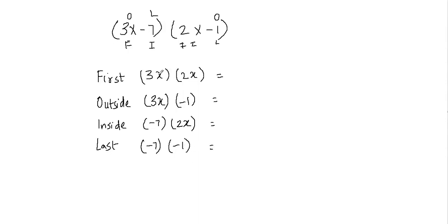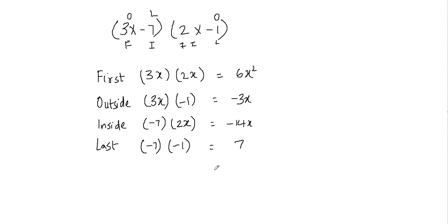Let's multiply all these. 3x times 2x: 3 times 2 is 6 and x times x is x squared. Then 3x times negative 1: 3 times negative 1 is negative 3, and we have x with it. Negative 7 times 2x: negative 7 times 2 is negative 14, and we have x with it. Negative 7 times negative 1 would be positive 7.